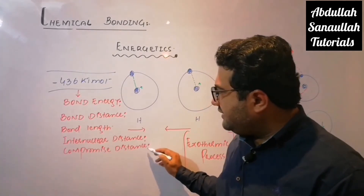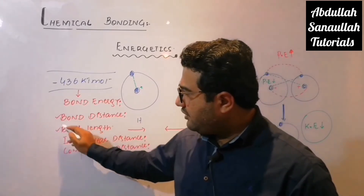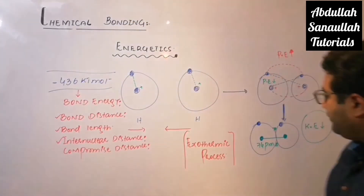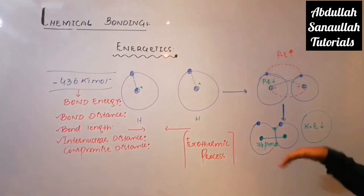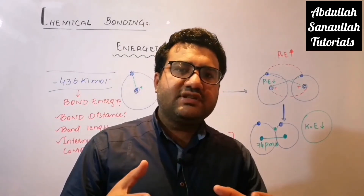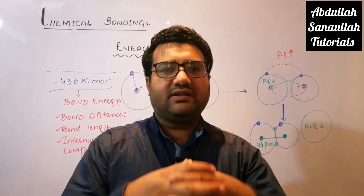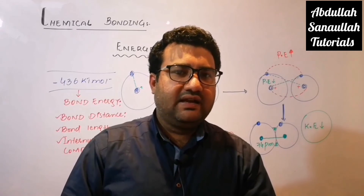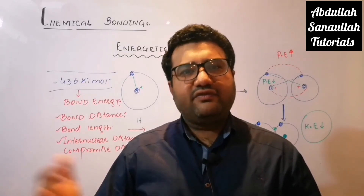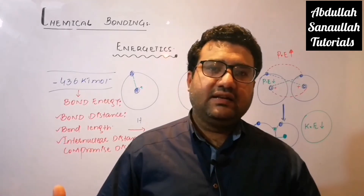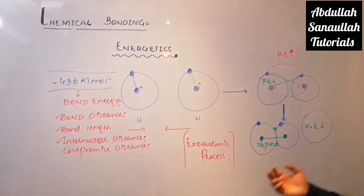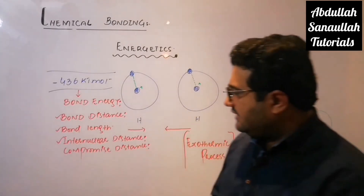It is easy to understand why it is called bond distance, bond length, or inter-nuclear distance. But why is it called compromise distance? It is called compromise distance because even when the atoms are bonded, forces of attraction and forces of repulsion are still both present between them. When both forces are present and they still decide to stay together — that is actually the compromise. Similarly, when a male and female get married, there are forces of attraction and forces of repulsion between them, but they still decide to stay together. That is compromise — the same compromise exists between two hydrogen atoms.